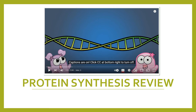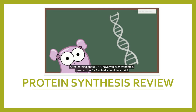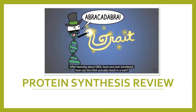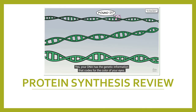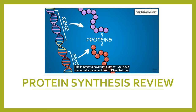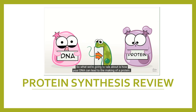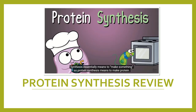Here we have a review of the protein synthesis process in this video. Now that you know about protein synthesis, we're going to watch this video because it's a lot of information at once and it does a great job of recapping everything. After learning about DNA, have you ever wondered how DNA can actually result in a trait? Your DNA has the genetic information that codes for eye color, and genes — which are portions of DNA — can code for proteins that help make that pigment. This process is called protein synthesis, which essentially means to make protein.